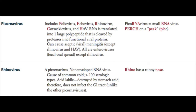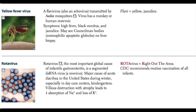Rhinovirus is a picornavirus that's non-enveloped RNA and is the cause of the common cold. There are more than a hundred different serologic types of the rhinovirus, which is why we can get colds over and over again — we're encountering different serologic types. Remember that this virus is acid labile, so it can be destroyed by stomach acid; therefore, we don't see GI tract infections with rhinovirus like we do with other picornaviruses. Just picture a rhino with a runny nose.